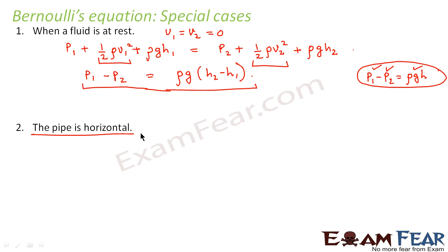So what will happen in that case? If the pipe is horizontal, that means H1 will equal H2 because both the ends will be at the same height.